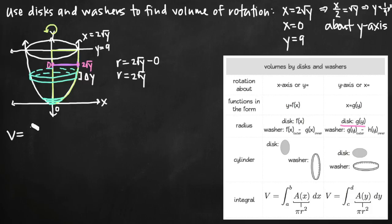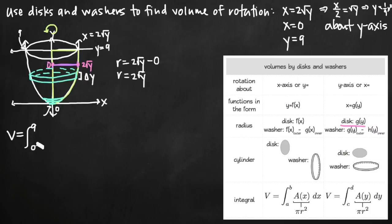Now we can plug things into our integral for volume. Volume equals the integral from c to d — our limits of integration are y values. The lowest y value for which our solid is defined is 0 at the bottom, and the highest is y equals 9. So our limits of integration are 0 and 9. The integrand is A(y), which is pi r squared. With r equal to 2 square root of y, we have pi times (2 square root of y) squared, dy.